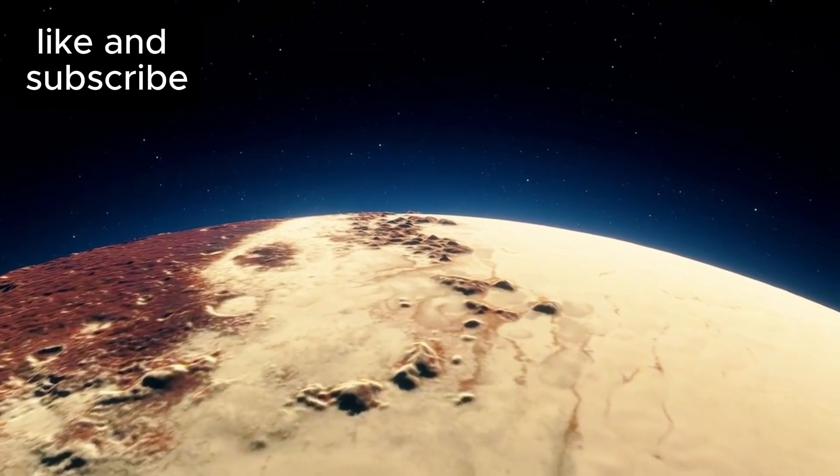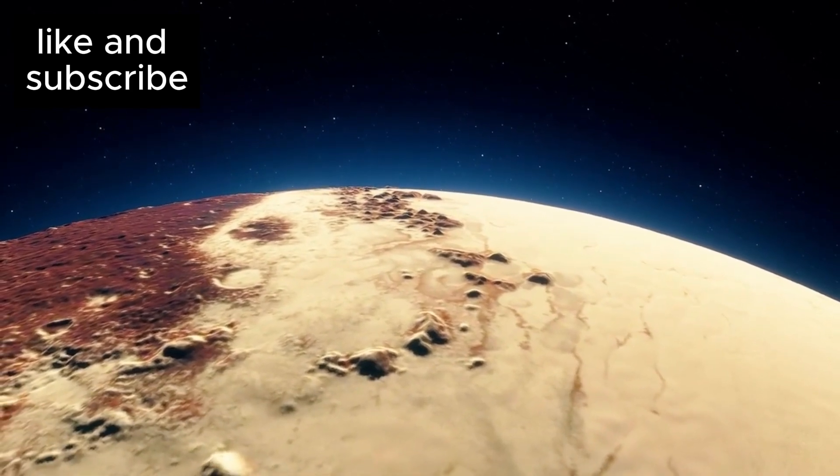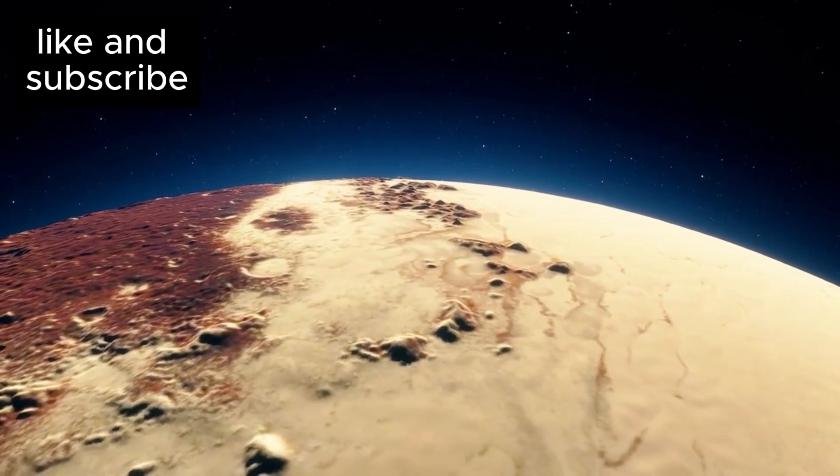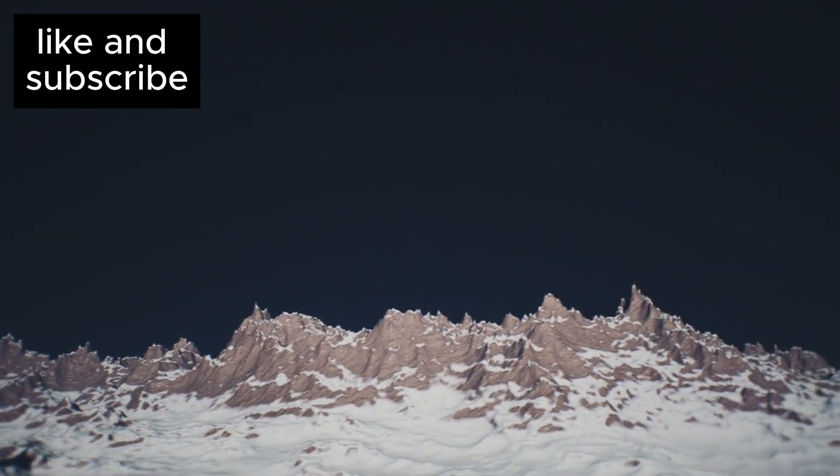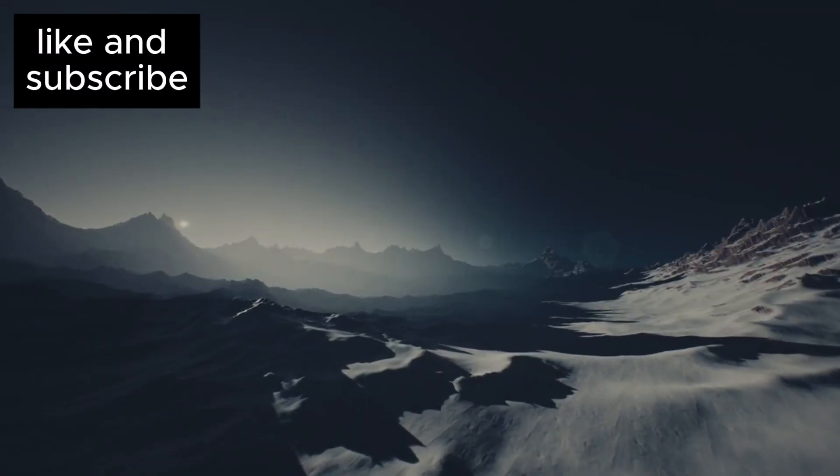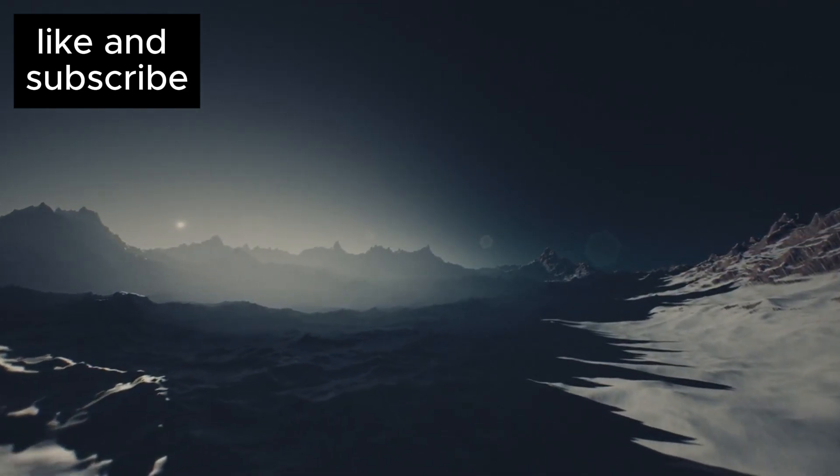One of the most extraordinary discoveries came from none other than Pluto's most famous feature, its heart-shaped glacier, Sputnik Planitia. But this glacier is no ordinary sheet of ice. It's a nitrogen glacier, stretching across over a million square miles of Pluto's surface.